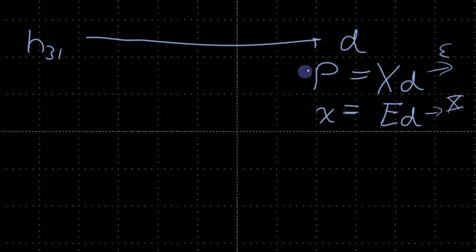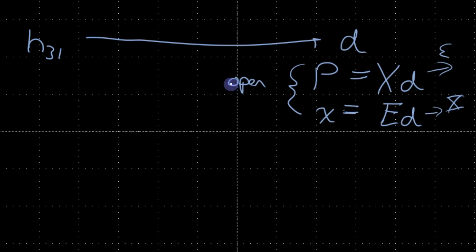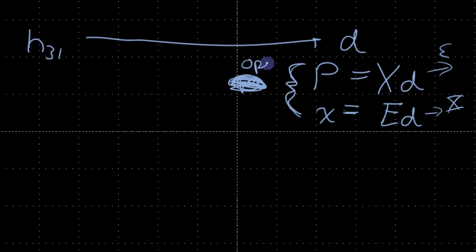If you want to simplify the equations, the top equation would be the open circuit case, and the bottom equation would be the short circuit or controlled voltage case.